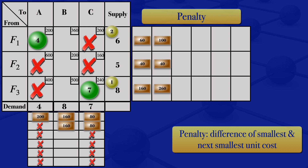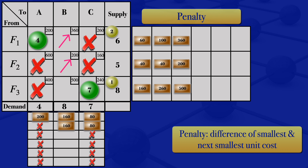In the next step, we recalculate penalties excluding all allocated and crossed-out cells. For row F1, only the value 360 remains, so the penalty is 360. For row F2, only the value 200 remains, so the penalty is 200. For row F3, only the value 500 remains, so the penalty is 500. For column B, the smallest and next smallest give a difference of 160.